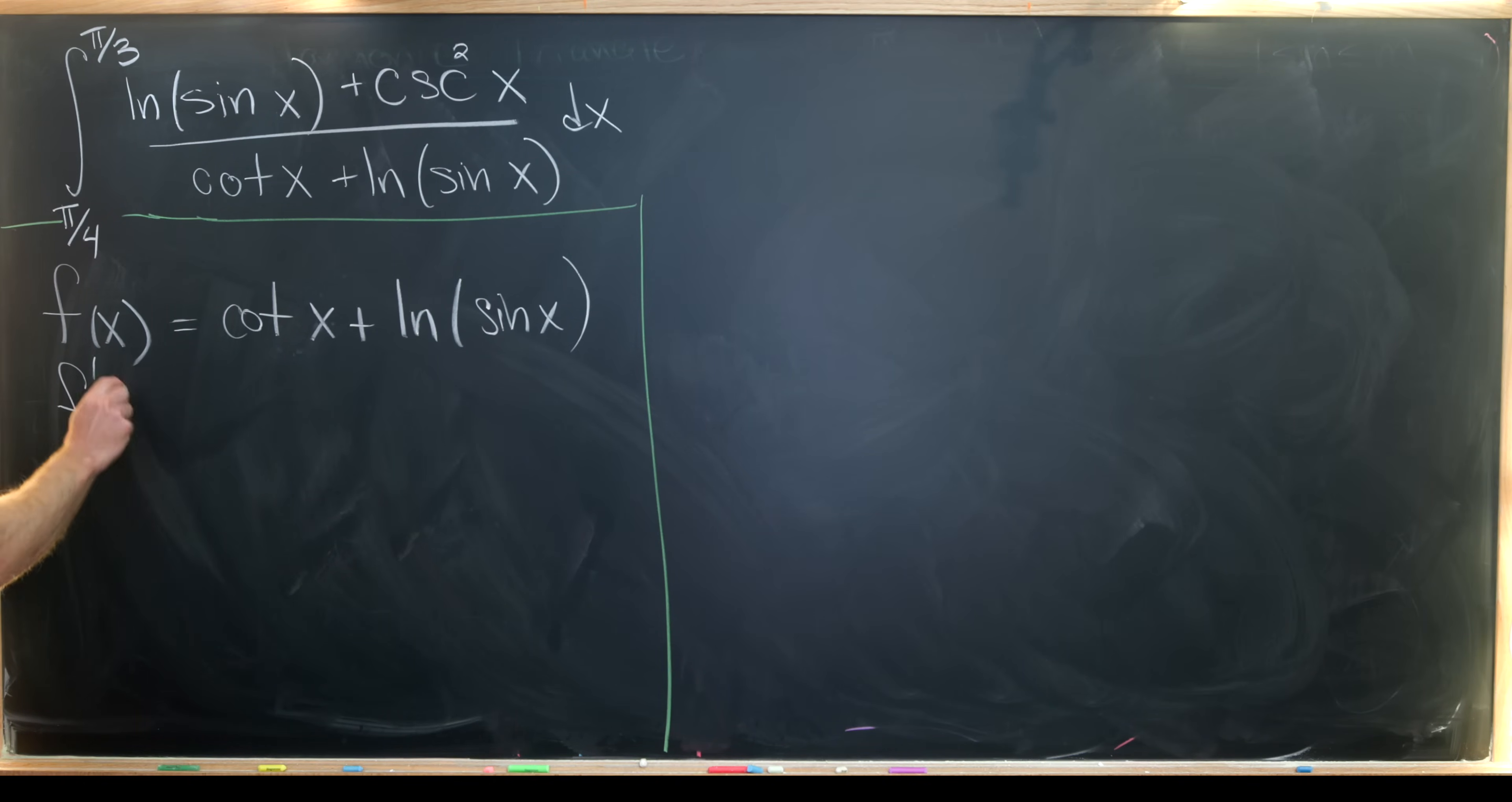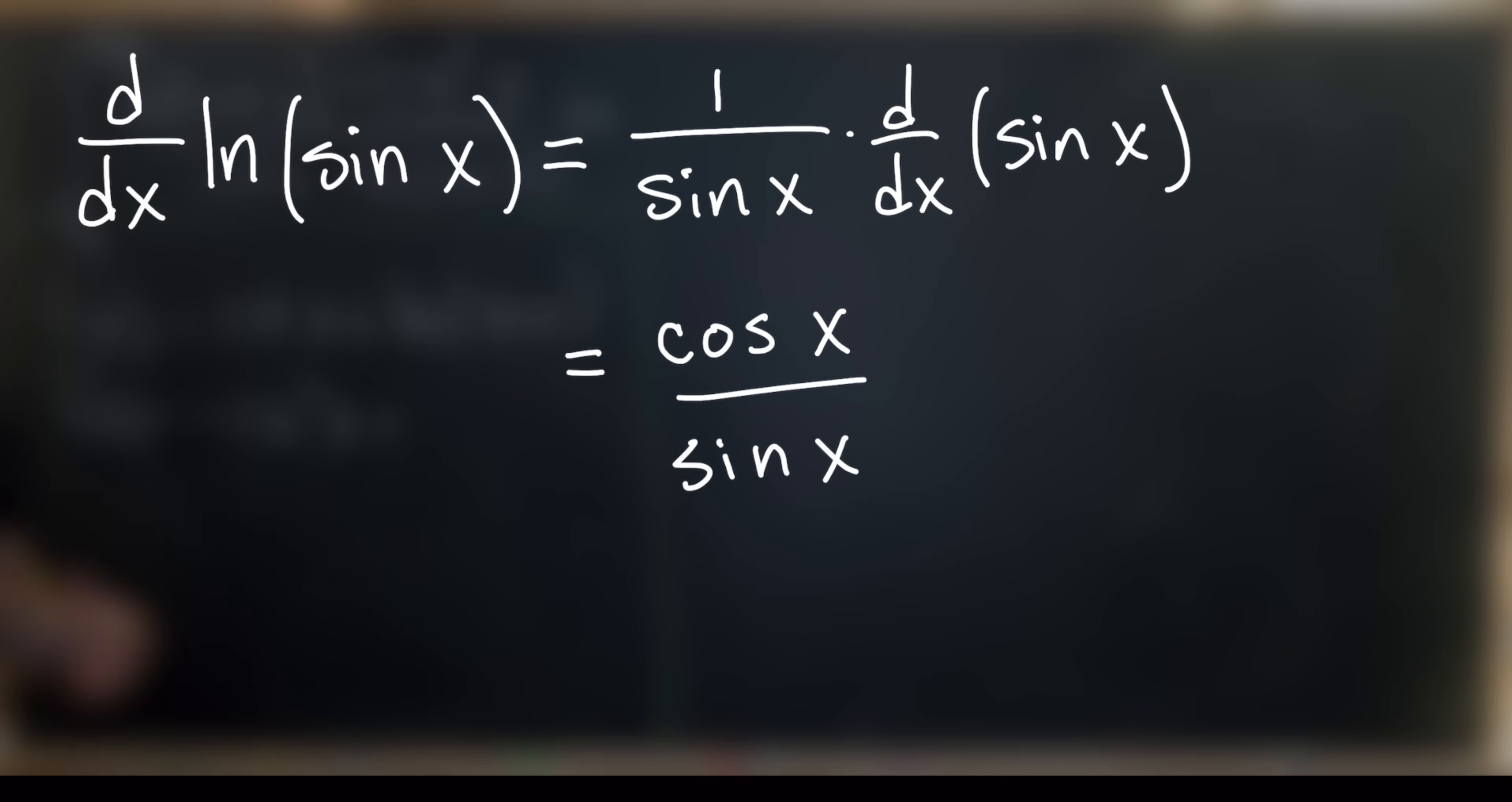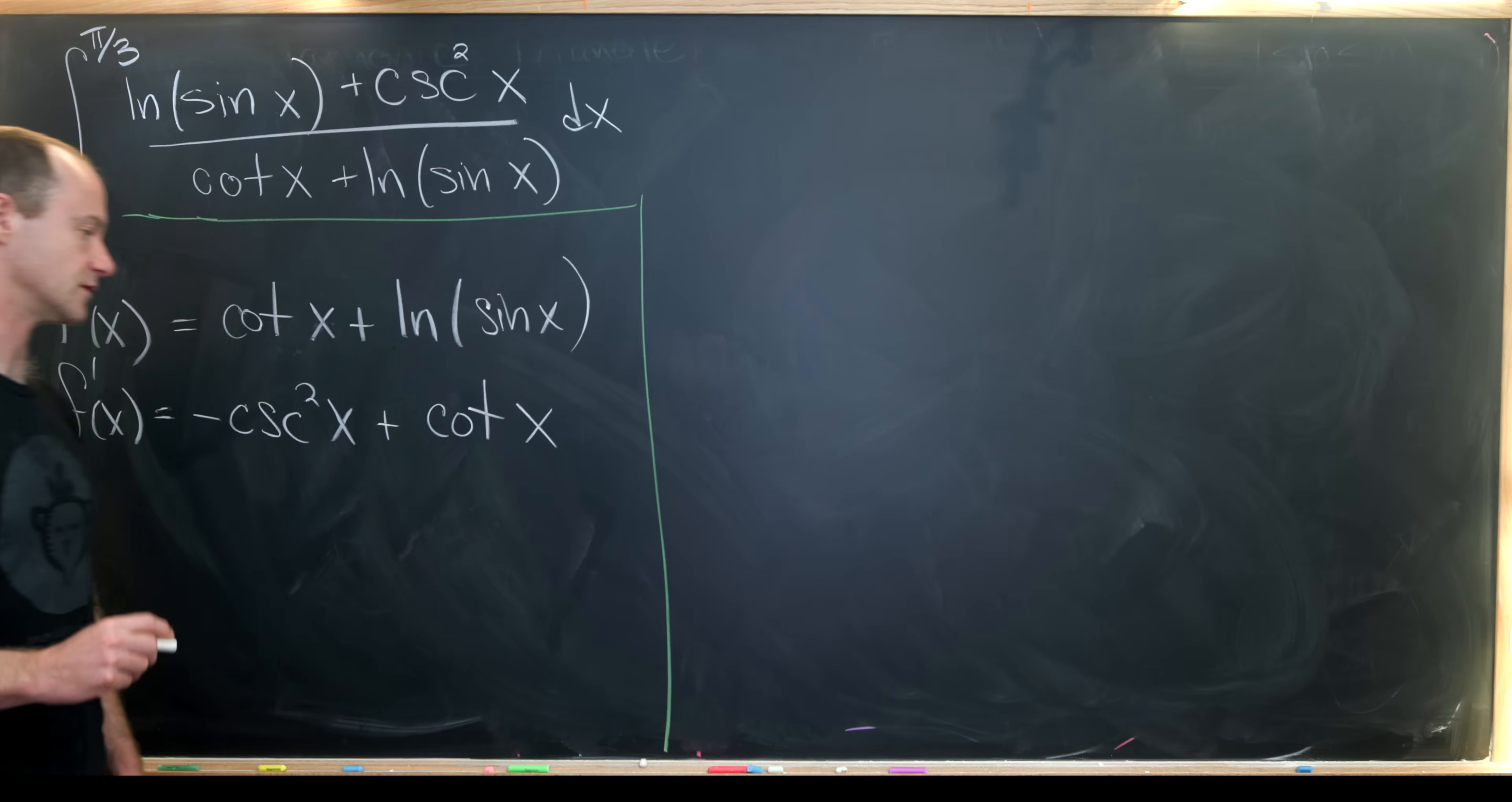Now let's see what the derivative of that function is. So the derivative will be negative cosecant squared of x plus, so the derivative of the natural log of sine, that'll be one over sine times the derivative of sine, which is cosine. So that's cosine over sine, which is cotangent. So I used the chain rule there.